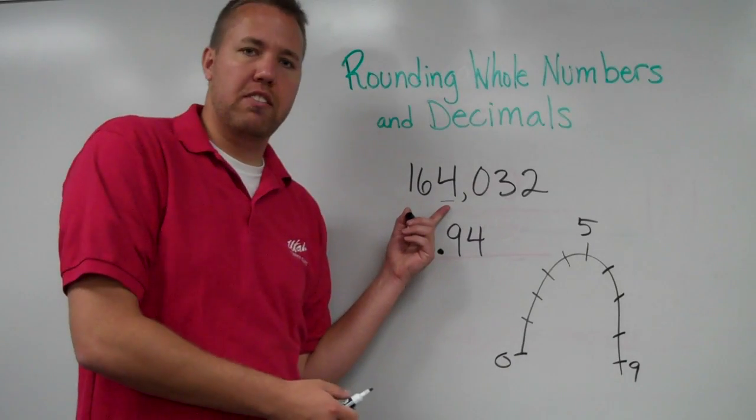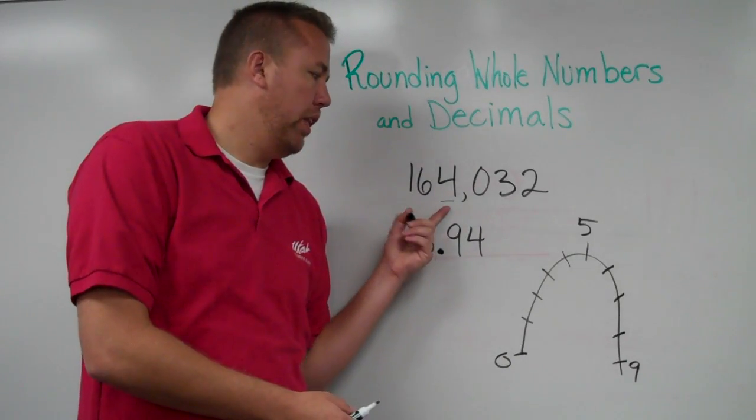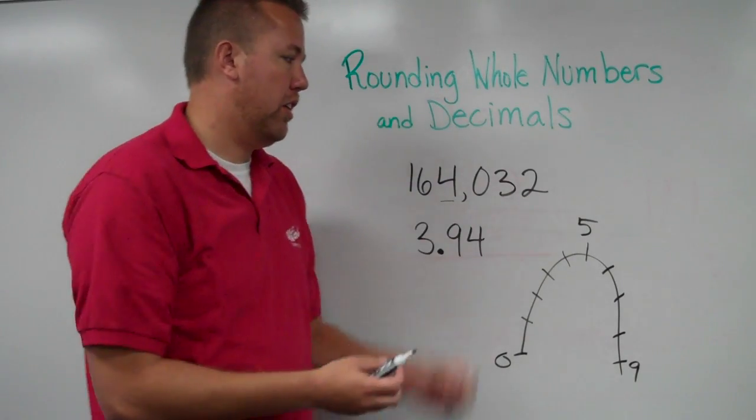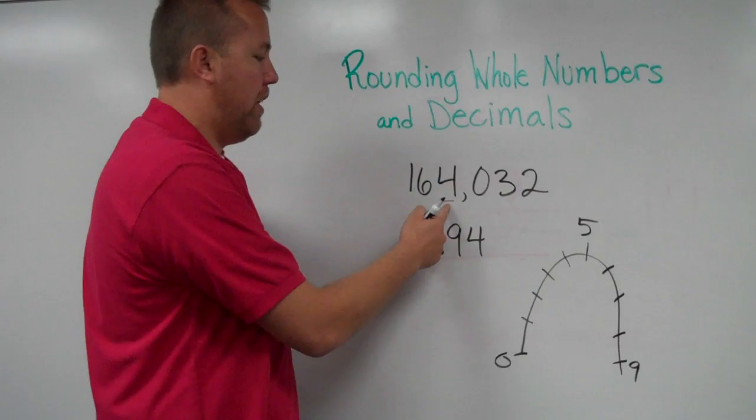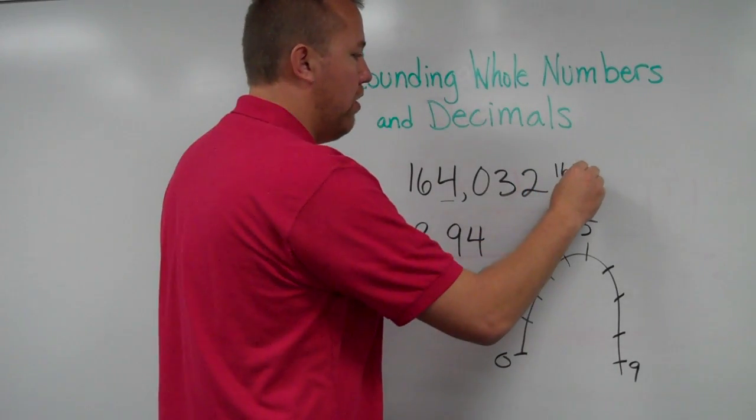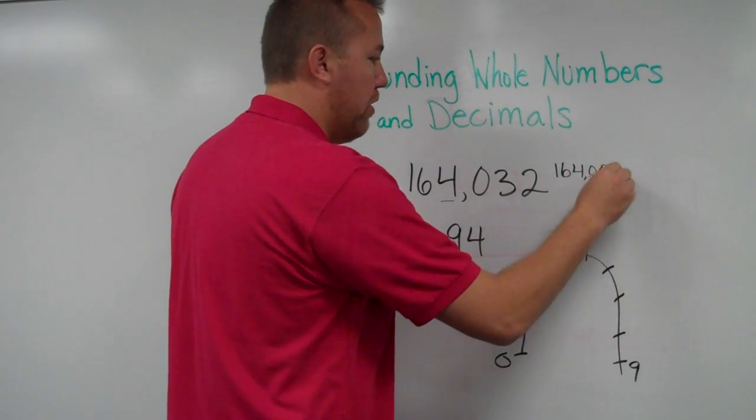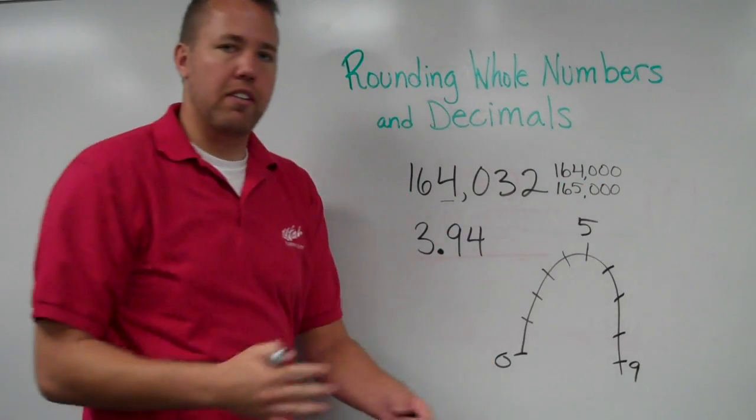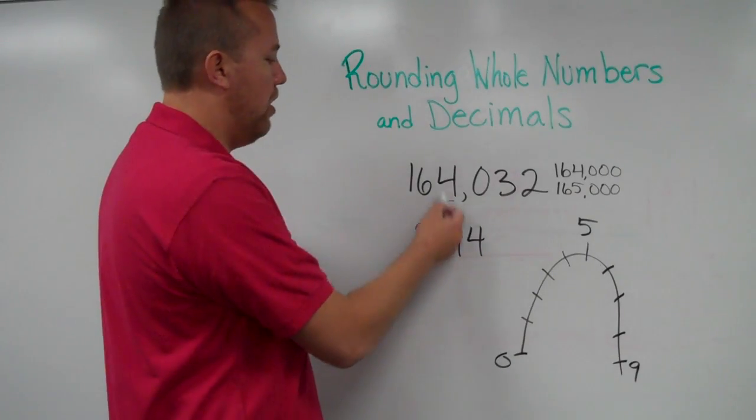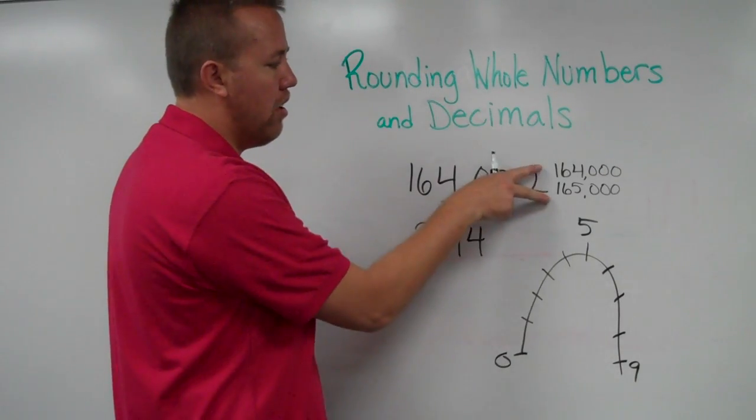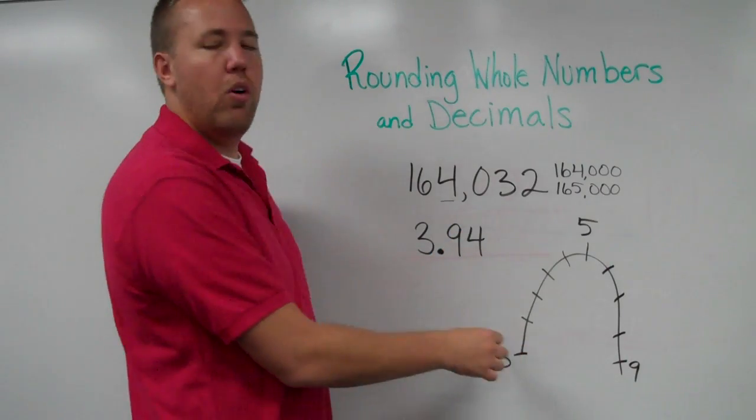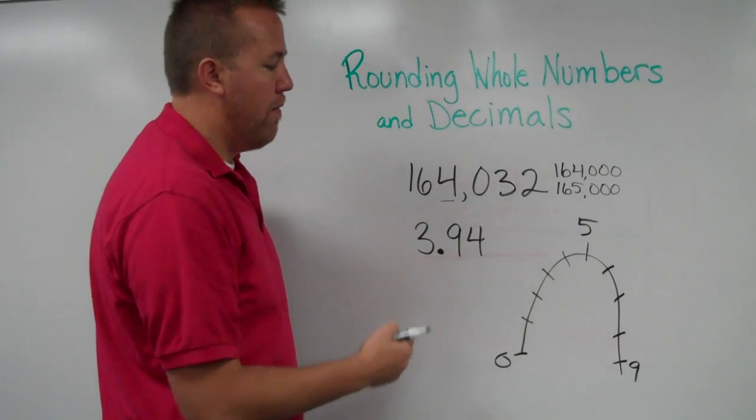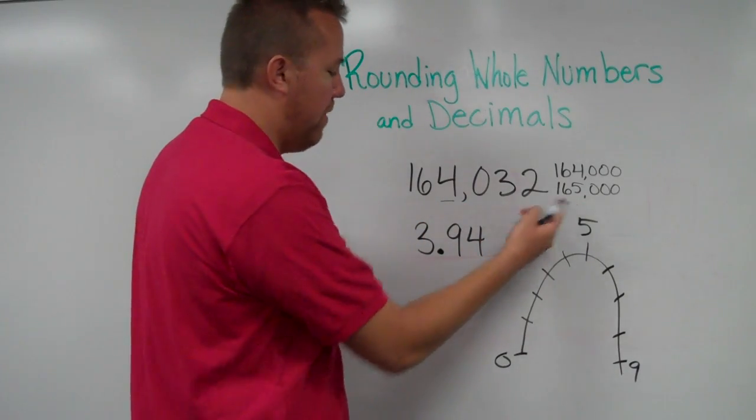So, as we're rounding to the nearest thousand, we look directly to the right. And then we judge, is that above or below the magic number? As it's asking to round to the nearest thousand, we have two choices. We can either round to 164,000 or 165,000, because those are the nearest thousands. So, as we look at this, round to the nearest thousand, here are our two choices. We have a zero. No way can we round up. So, if we rounded this number to the nearest thousand, it would be 164,000.